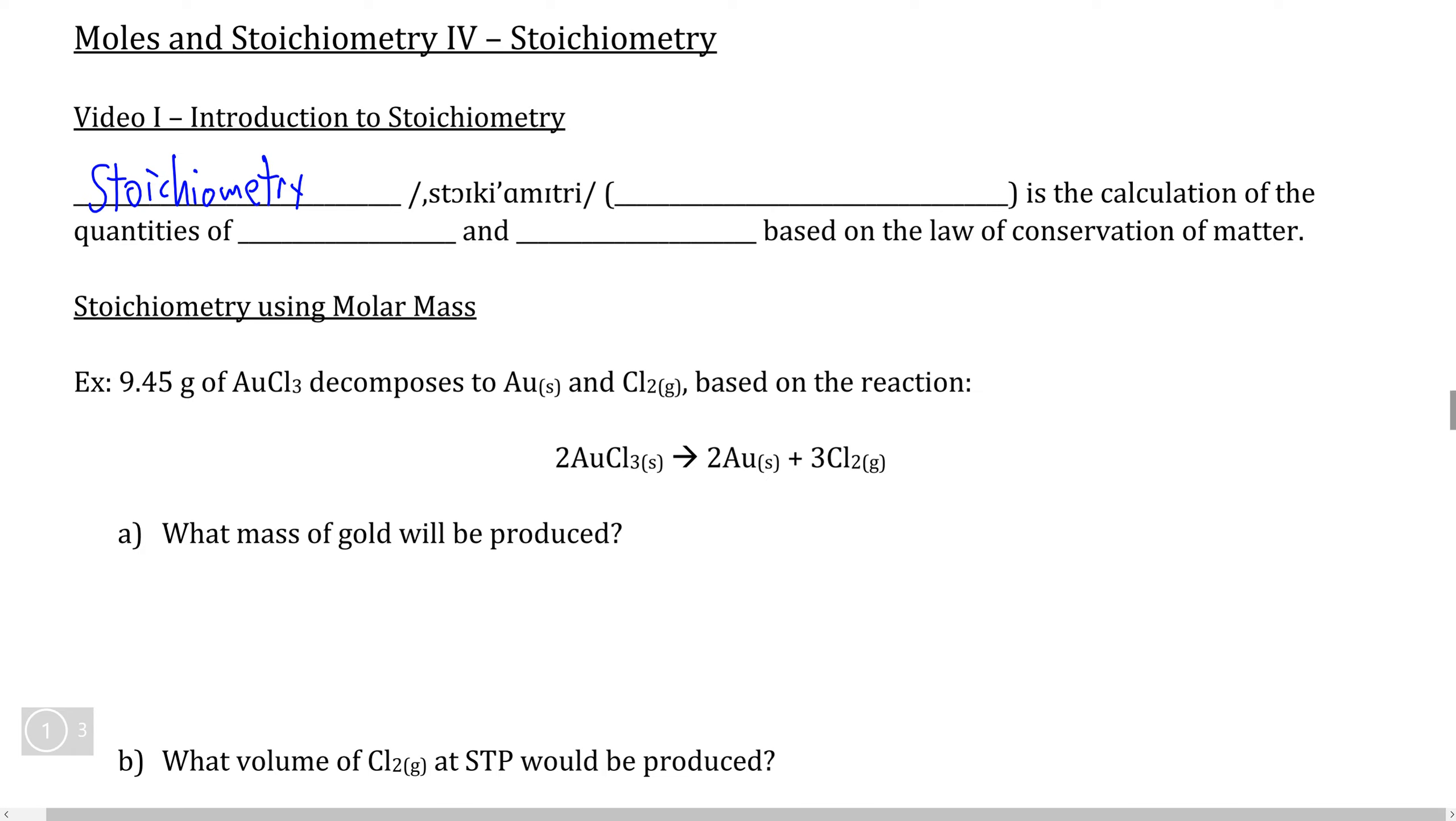Stoichiometry is the calculation of how much reactant we need to produce a specific number of products, or how much products we can produce if given a specific quantity of reactants. It takes advantage of the law of conservation of matter, which simply states that matter can neither be created nor can it be destroyed.